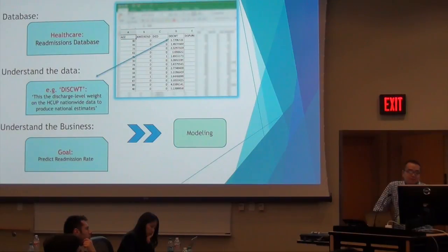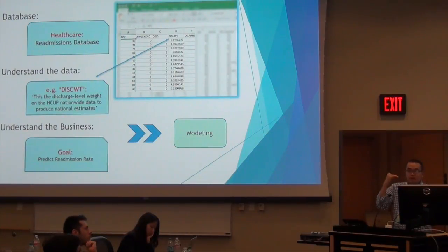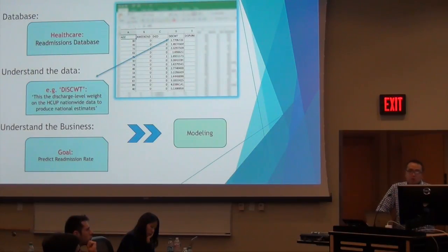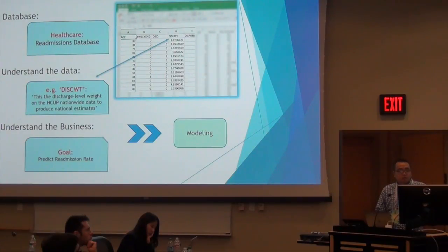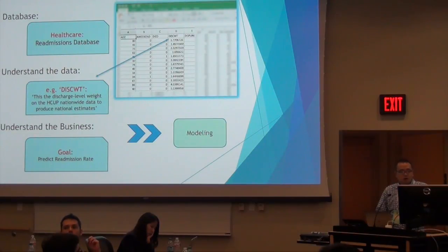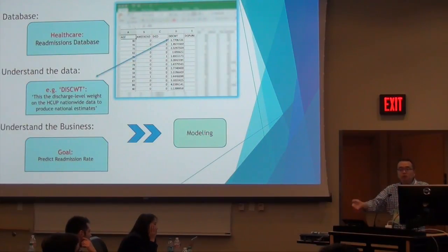For instance, there was a medical term — SCWT — I didn't know that at all. But you need to learn what that means and then use it as a feature when feeding into the machine learning model. The first step is you learn the data, you learn the business, and then you specify the requirements. The requirement was to build a prediction model to forecast readmissions, to help the hospitals improve.